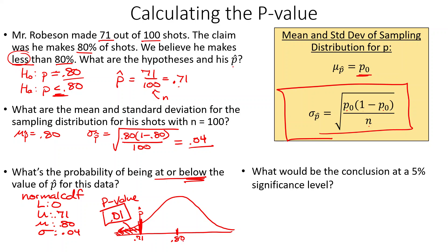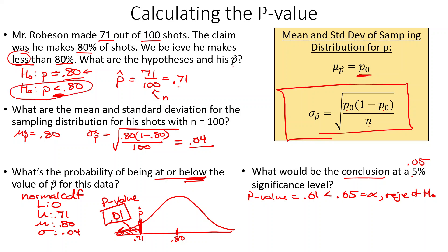So what's the conclusion at the 5% significance level? Our p-value equals 0.01, which is less than 0.05, our alpha. Since p is low, we reject the hoe — we are rejecting the null hypothesis. That means we go with the alternative: we have evidence that p is less than 0.80, or less than 80%.